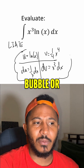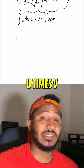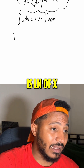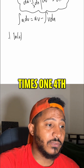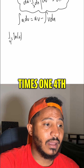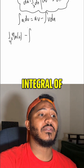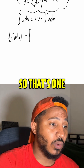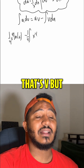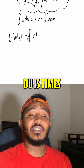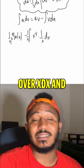So, using our formula, the integral becomes u times v, which is ln of x times 1/4 x to the 4th, minus the integral of v du. So that's 1/4 x to the 4th times 1 over x dx.